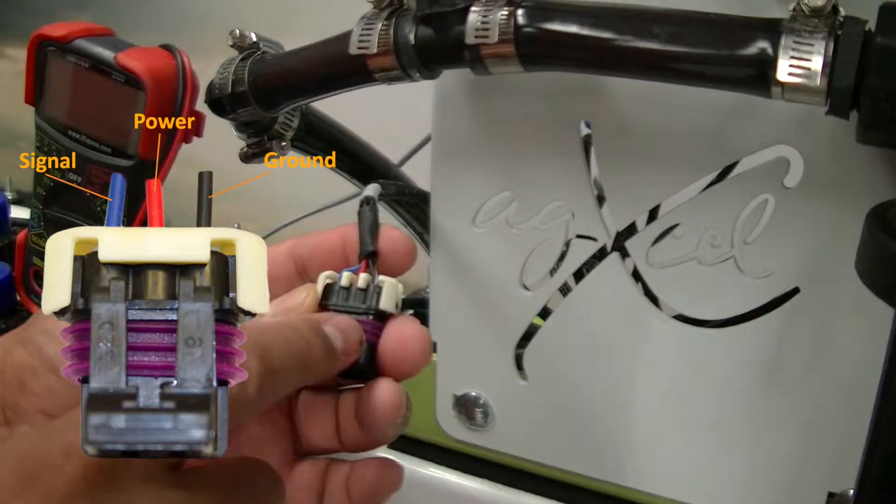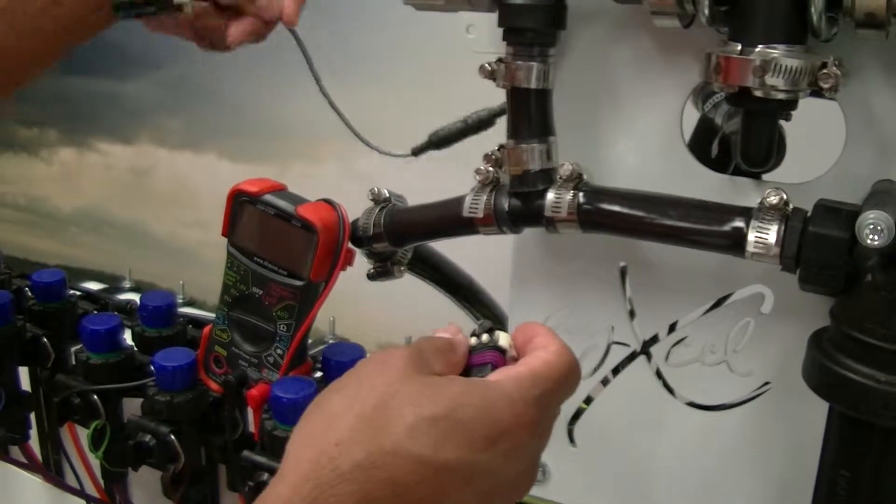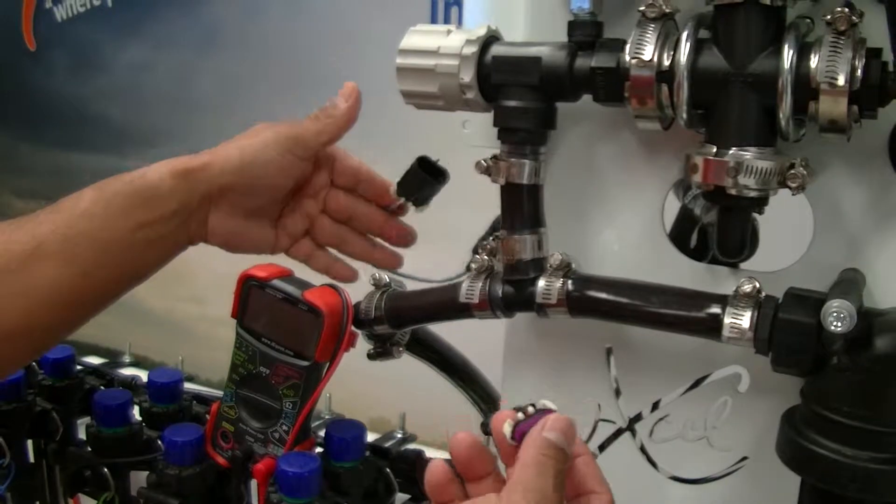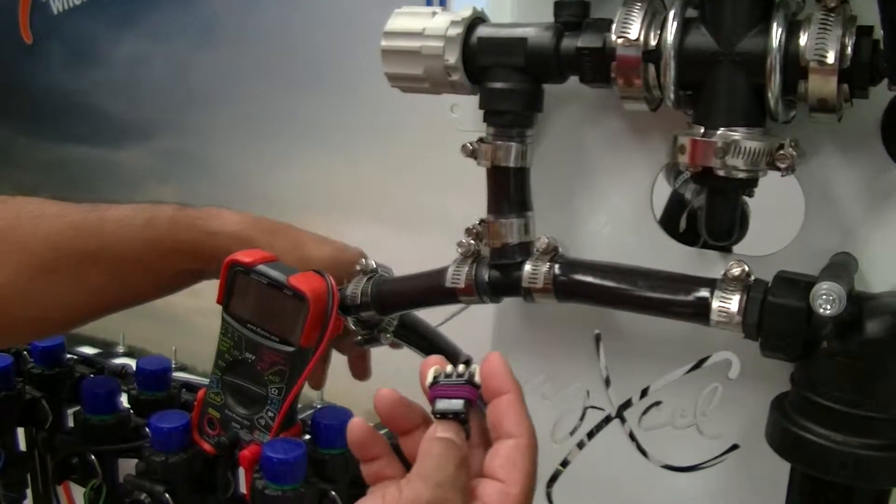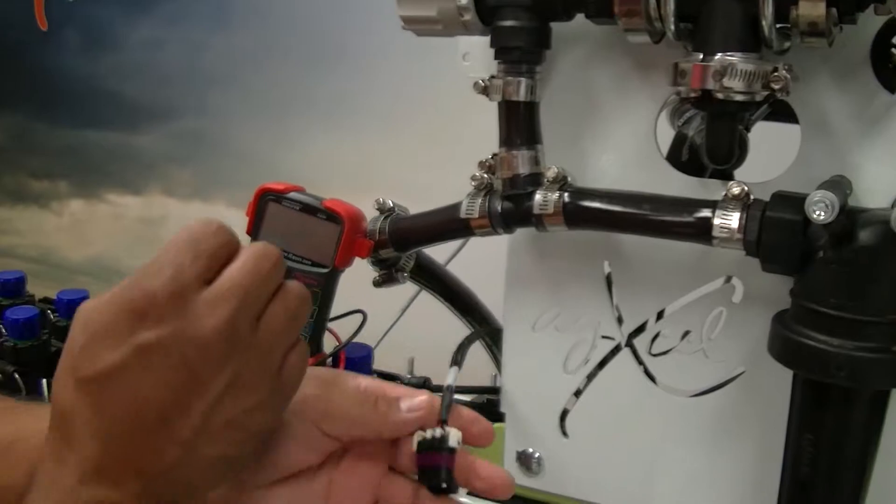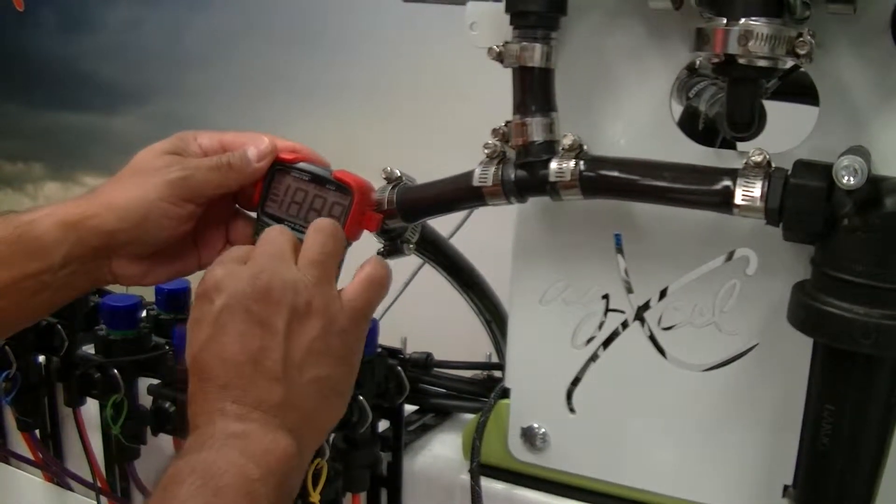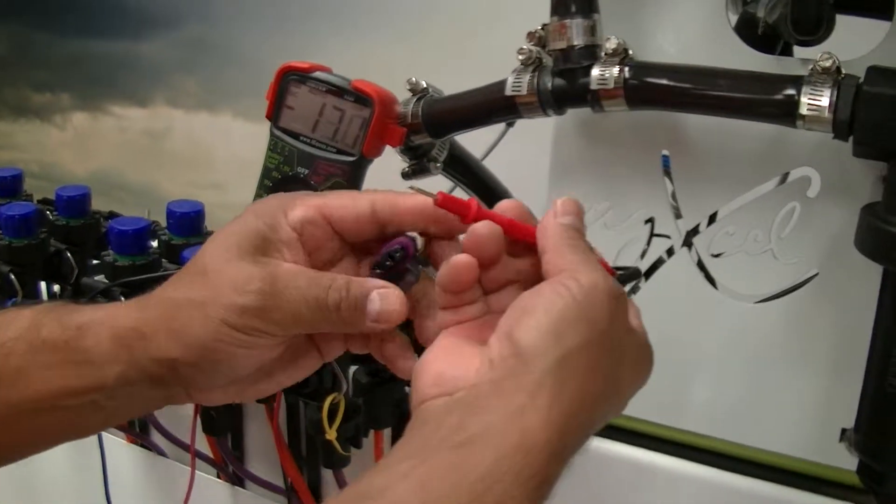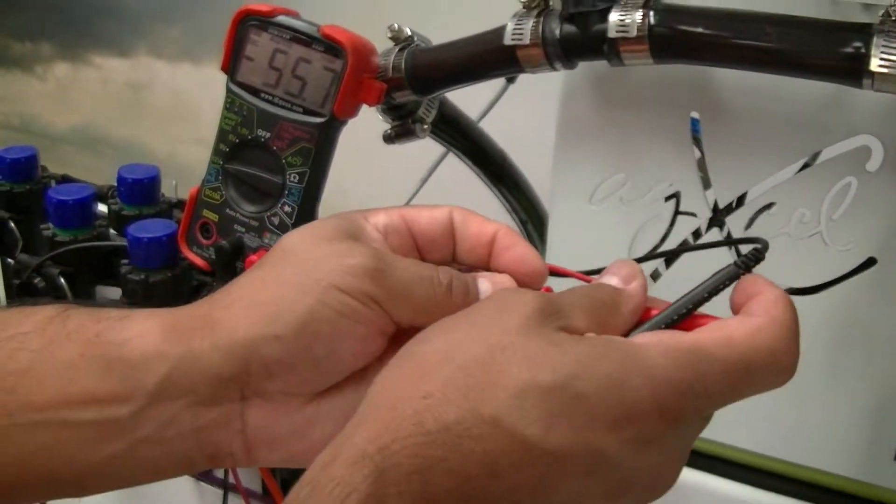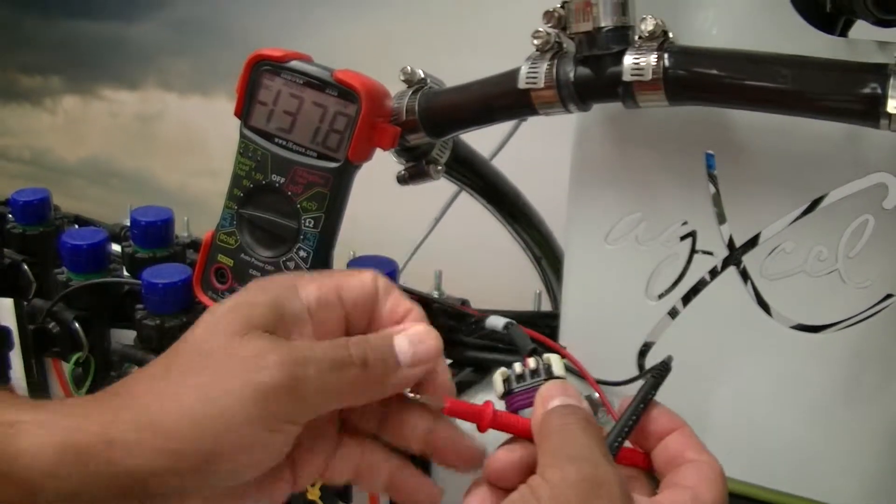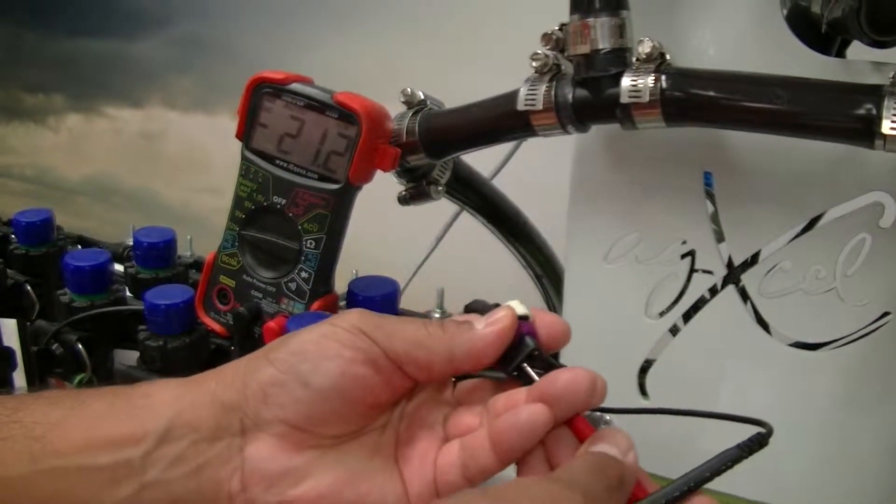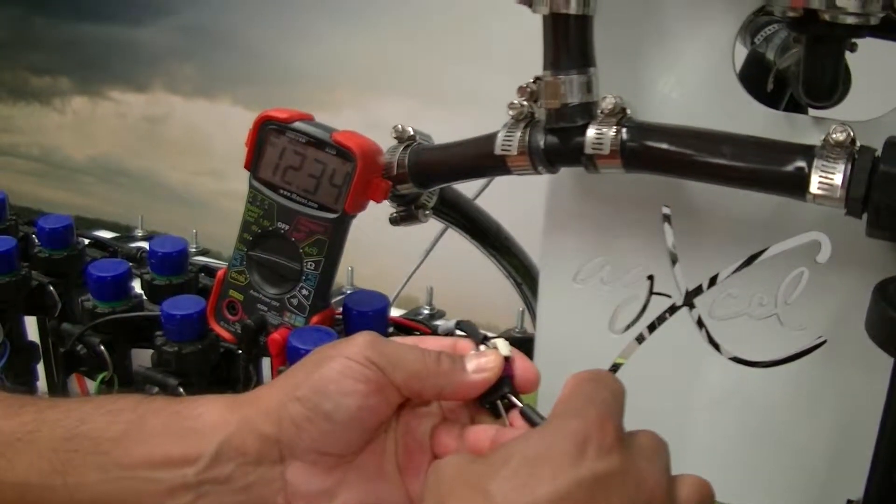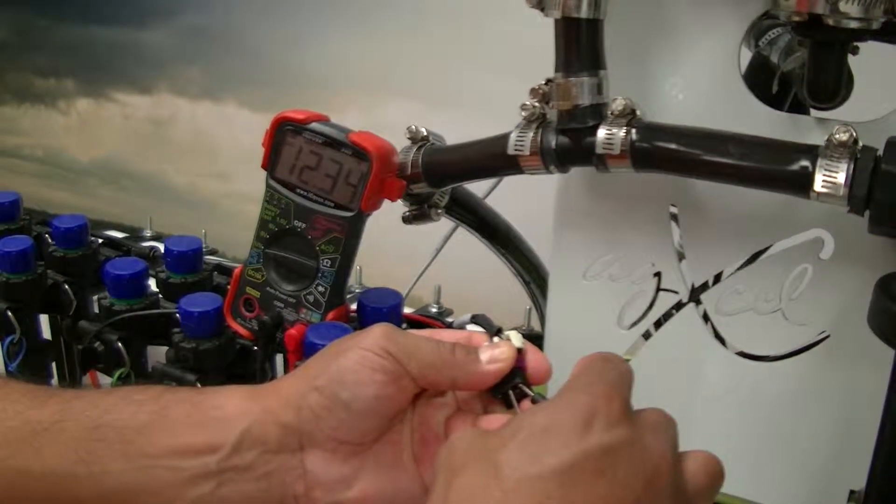The first thing we're going to check is to make sure that we have voltage going to the flow meter itself. So no matter what kind of system you're connected to, we first want to check voltage. So the first thing we're going to do is check our black and our red. I'm going to turn my volt meter on and then I'm going to connect it here to red, goes to the power, 12 volts. And then I'm going to have my black go to my ground. And there we have 12.3 volts.